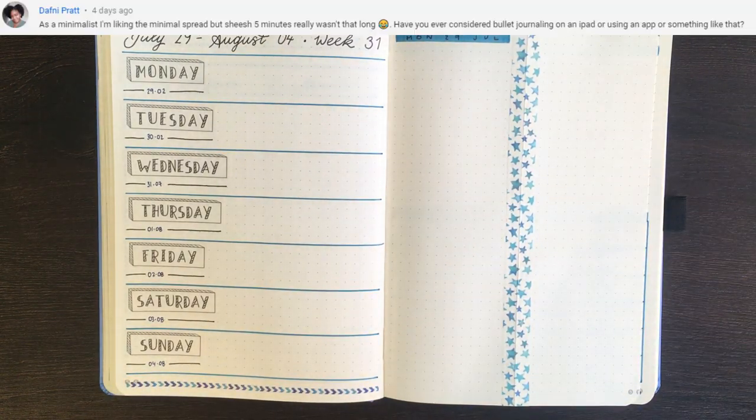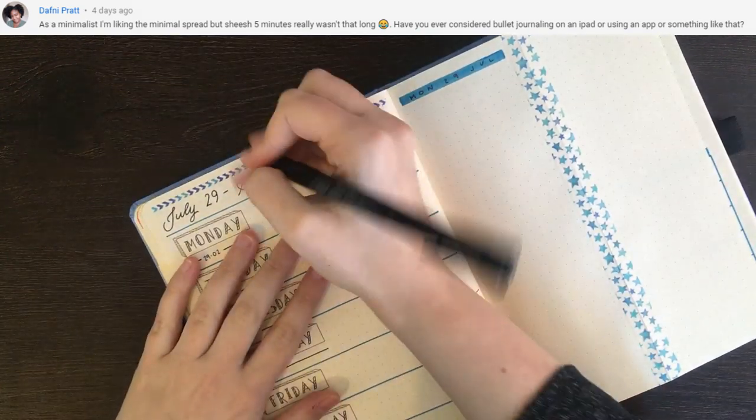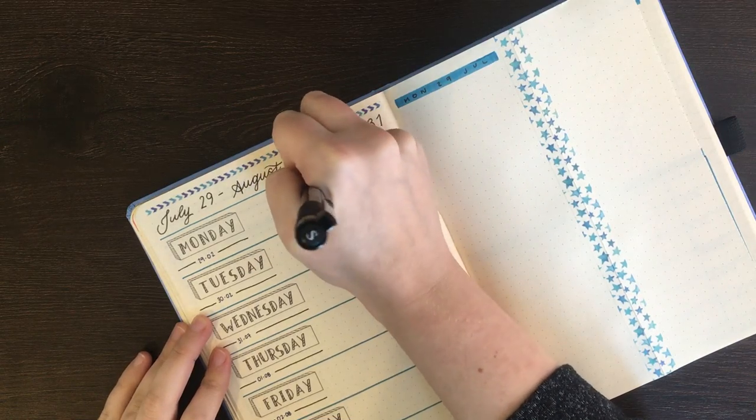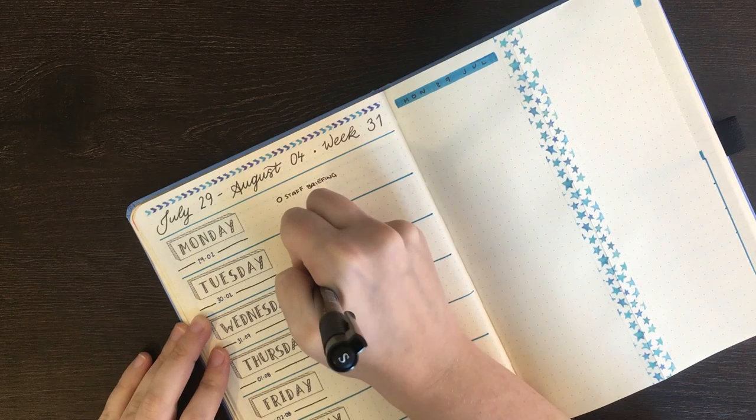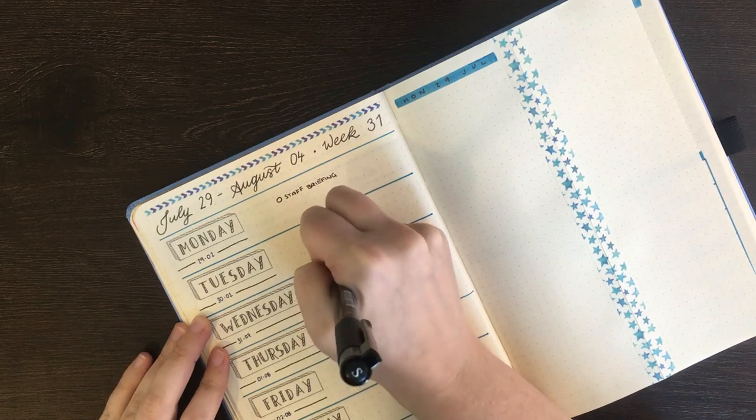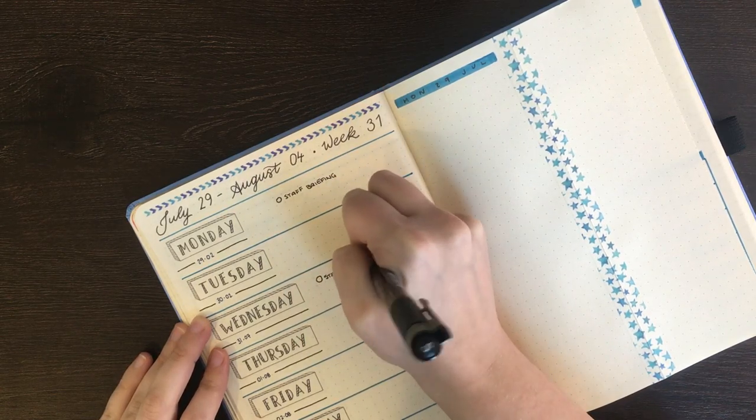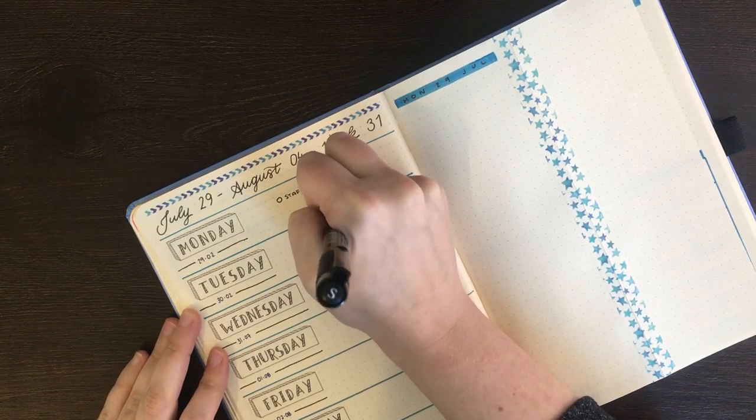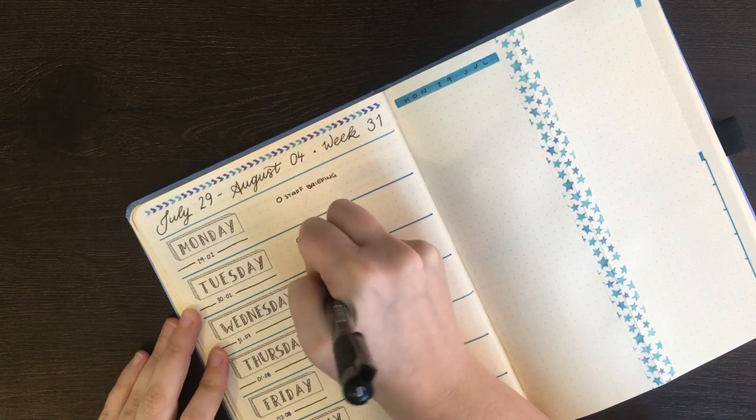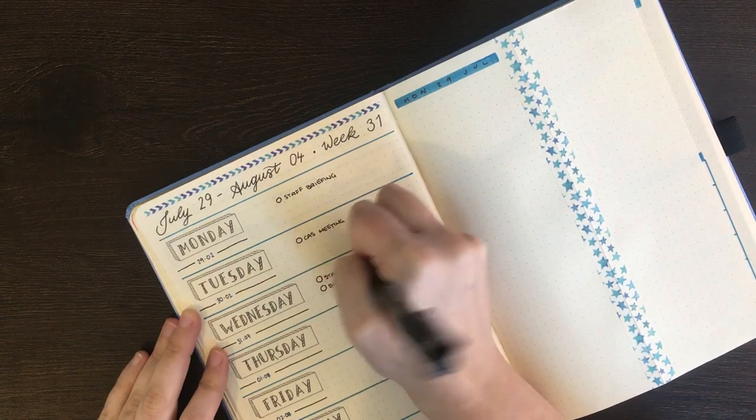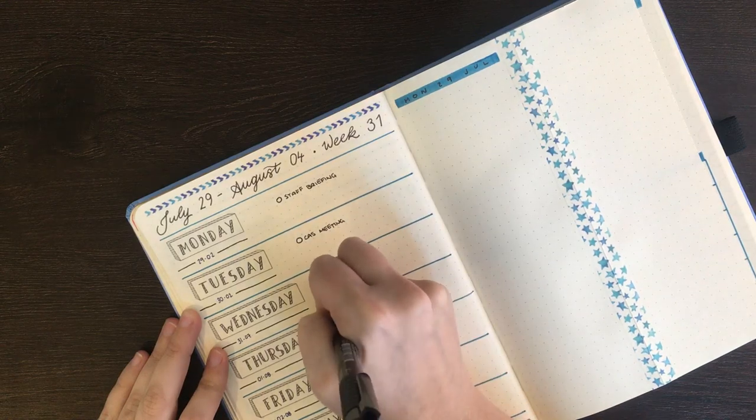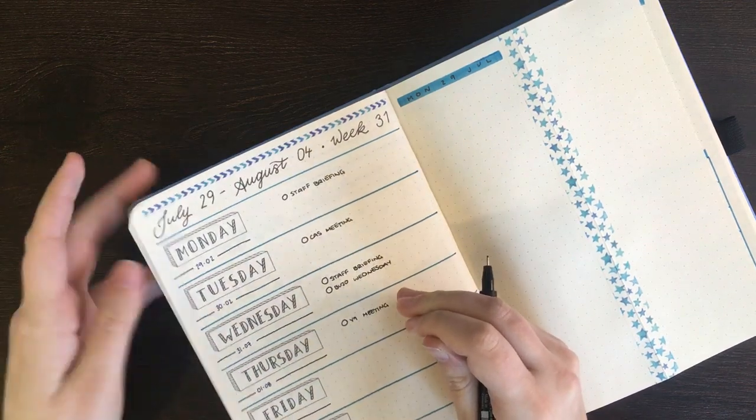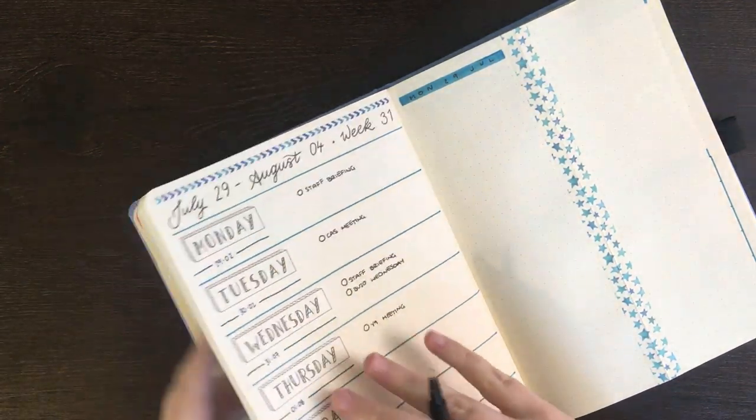Our third question comes from Daphne who asked, have you ever considered bullet journaling on an iPad or using an app or something like that? So I'm going to use the term considered very loosely here. I thought about it a couple of times, very very briefly, and decided I really just like the feel of pen and paper. I find that the act of having to physically write something down rather than type it out helps me remember things a lot better and I enjoy the satisfaction of physically ticking things off a checklist. I have used digital to-do lists before and although they work perfectly fine, I personally prefer to have mine handwritten.